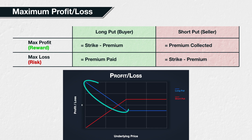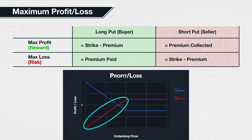For the put option buyer, their profit continues to increase for every dollar decrease in the underlying price. The put option buyer's profit is calculated as strike minus price minus premium. So if we assume a minimum price of $0, their maximum profit is limited to strike minus premium. When the put option buyer has their maximum profit, the put option seller has their maximum loss of the same amount. The put option buyer suffers their maximum loss when the underlying price at expiry is above the strike price, rendering the put option worthless. When this is the case, they lose the premium they paid for the option, but nothing more.